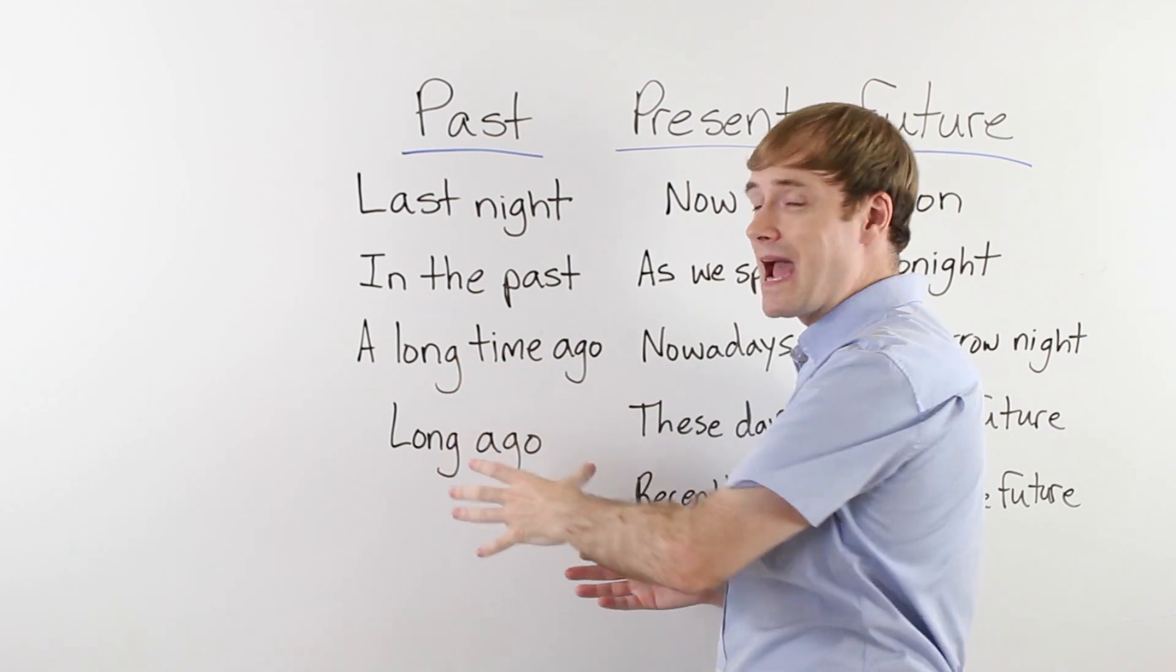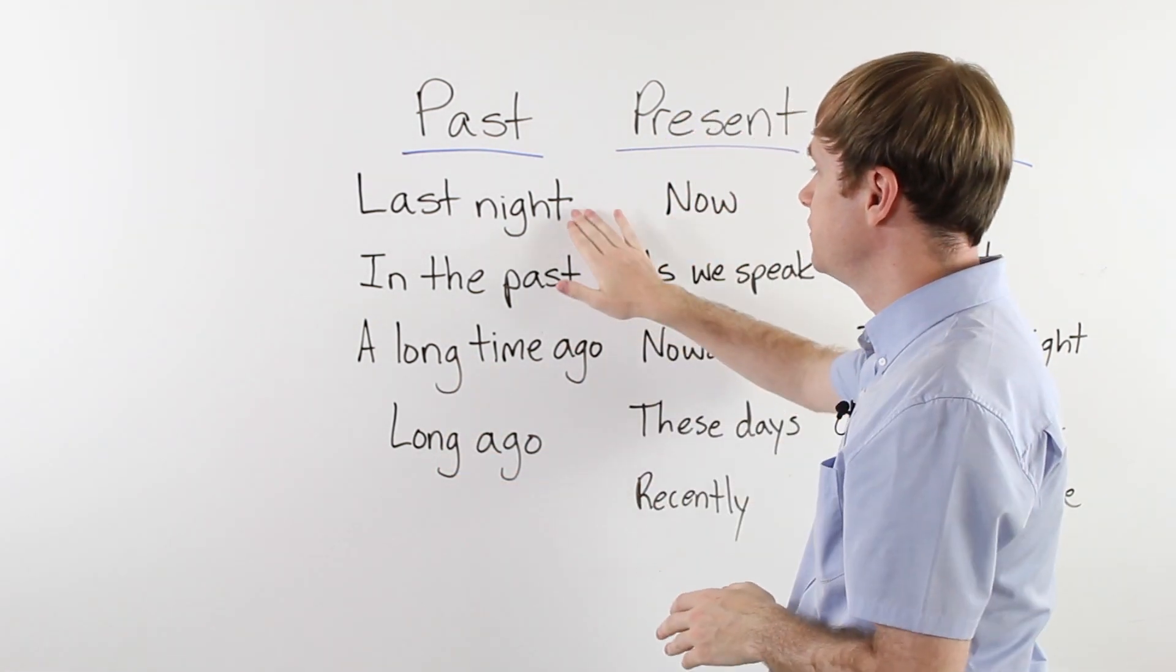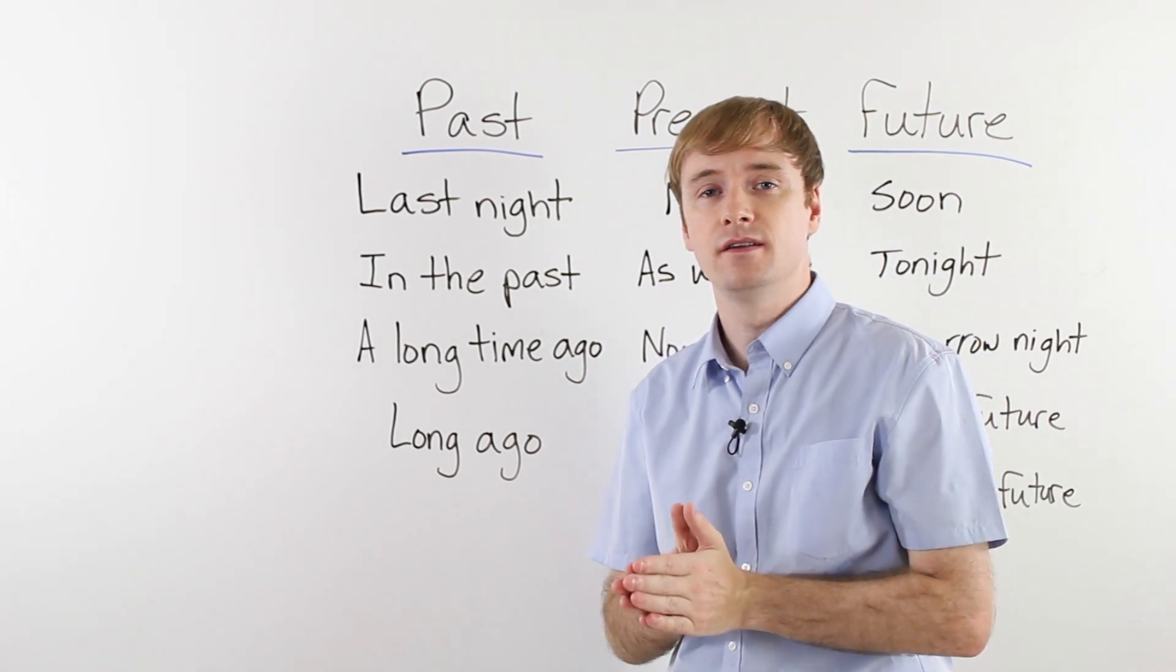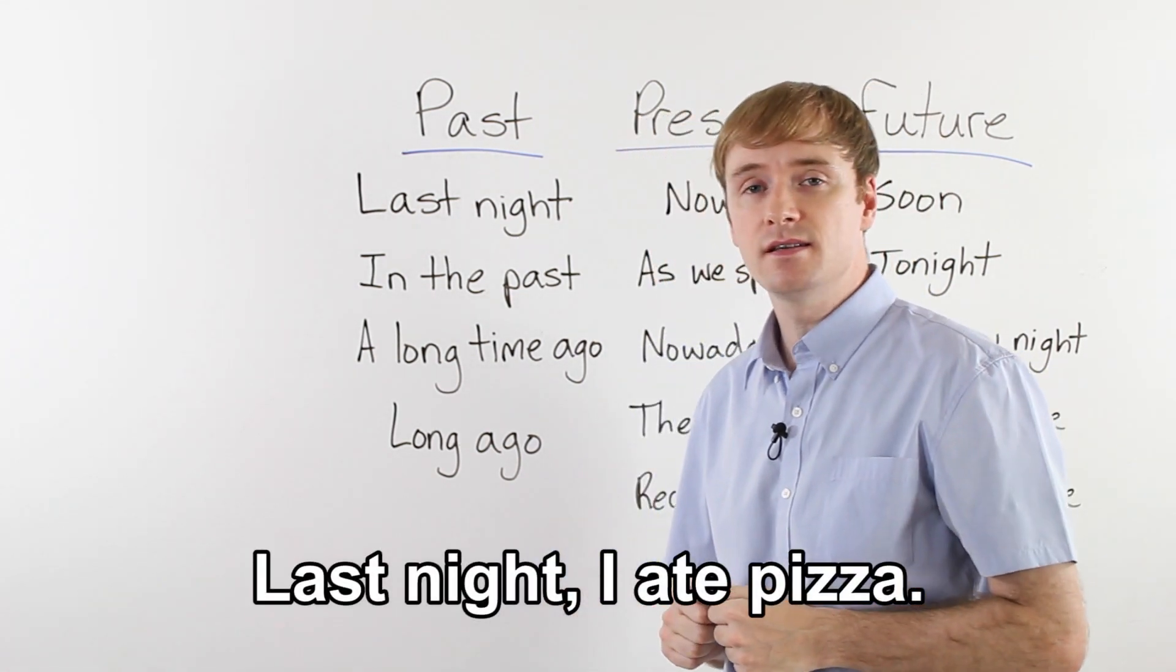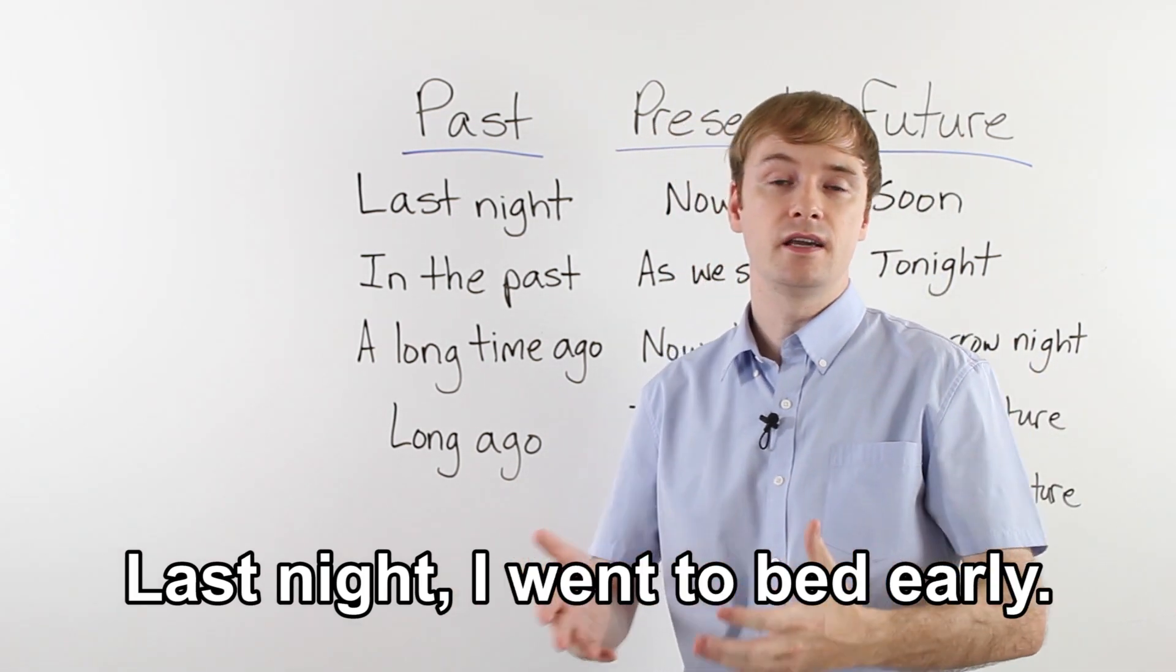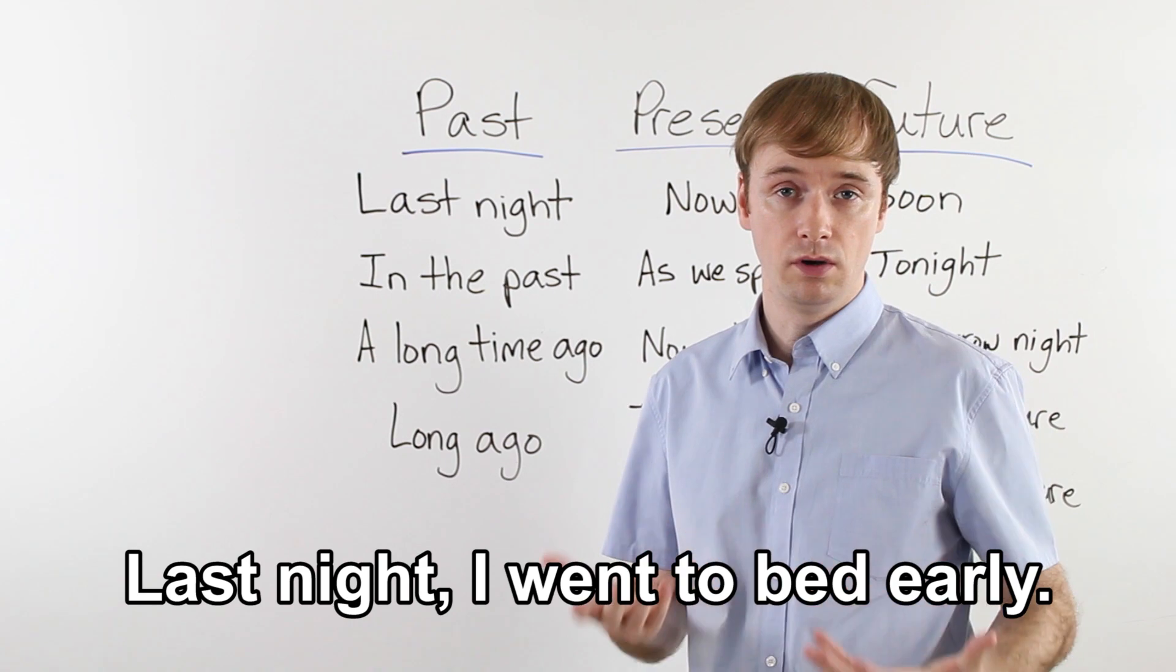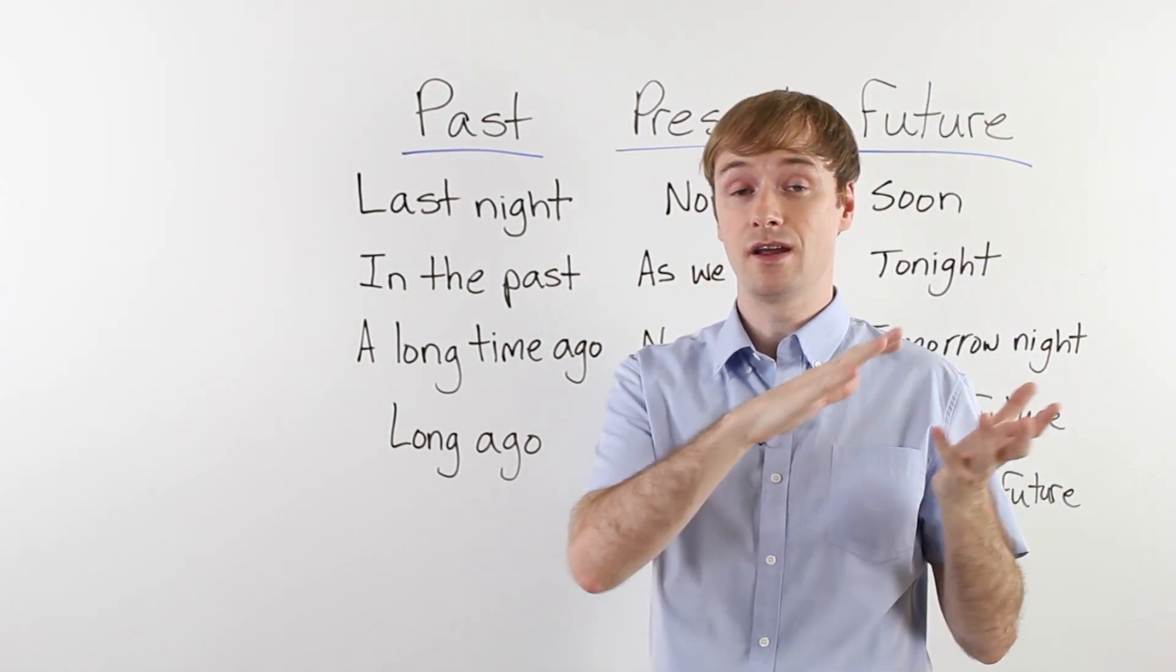The first is the past. Things that happened before. And the first one, very common. Last night. Very easy to use. Last night I ate pizza. Last night I drank a beer. Last night I went to bed early. So very easy to use to talk about yesterday night.